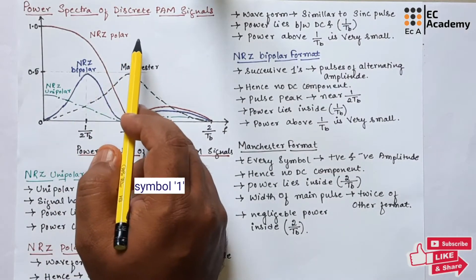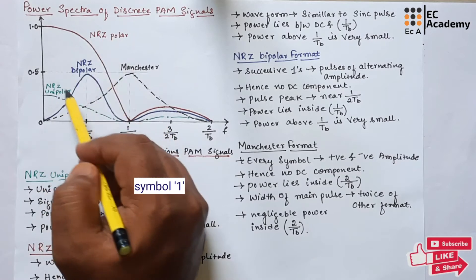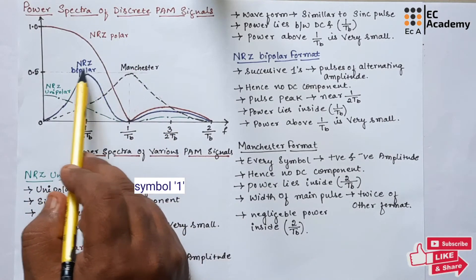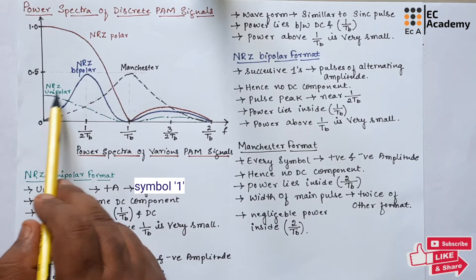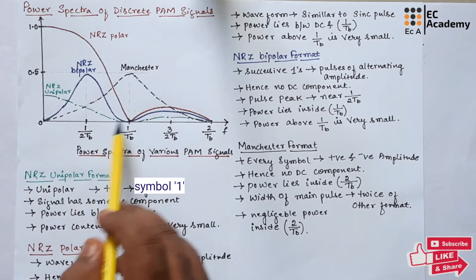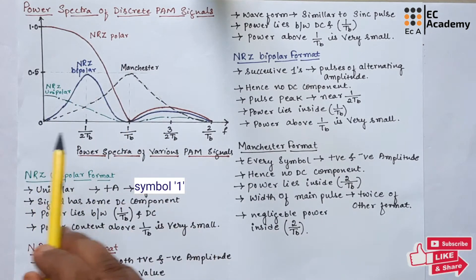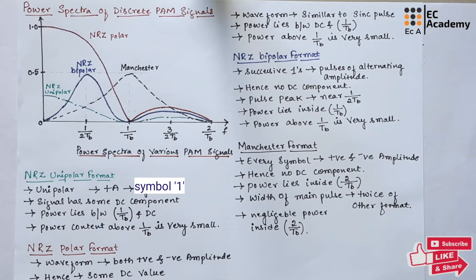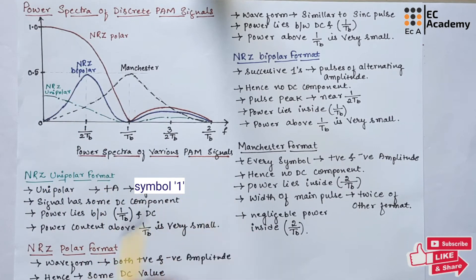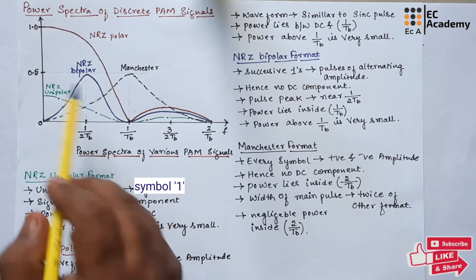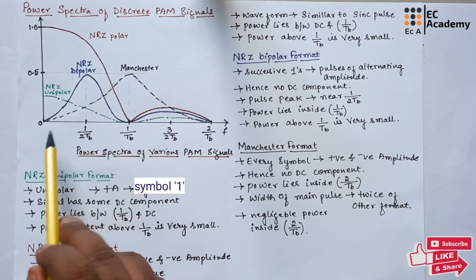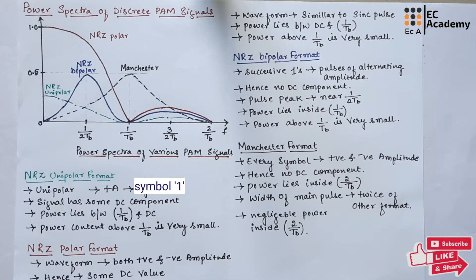In the previous lecture, we understood different PAM signals like NRZ polar, NRZ bipolar, Manchester, and NRZ unipolar. For all these signal representations, we will see the power spectrum. The figure shows the power spectrum of various PAM signals, and each signal is represented with a different color so that we can identify the power spectrum.